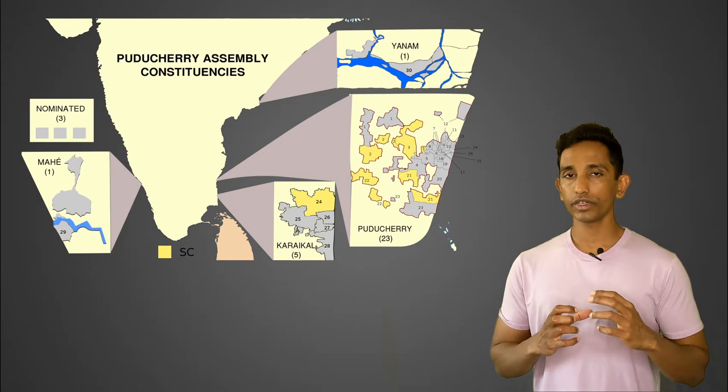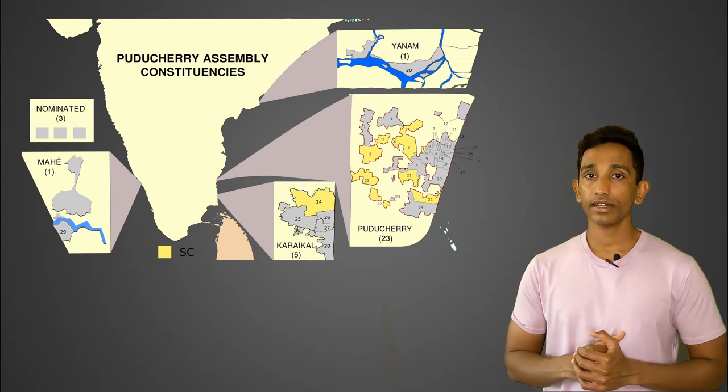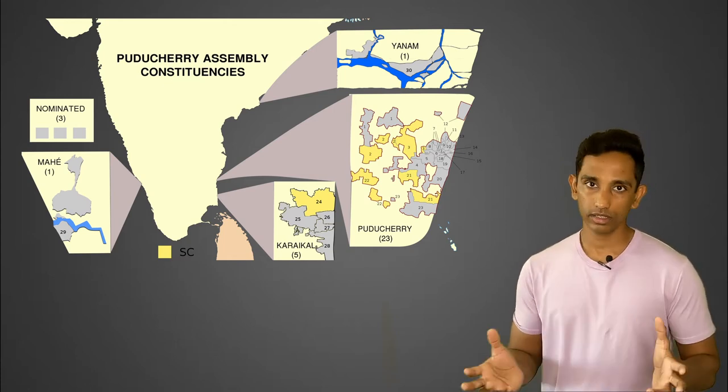In terms of administration and governance, the Union Territory of Puducherry is similar to the Union Territory of the National Capital Territory of Delhi. It has its own elected assembly and a cabinet of ministers, giving it partial statehood. The Legislative Assembly has 30 seats — 23 in Puducherry district, 5 in Karaikal district, one in Yanam, and one in Mahe. The center is represented by a lieutenant governor who resides in Raj Niwas, also called Palais du Gouverneur — the governor's palace — where the French governor used to live when this was still a French colony.